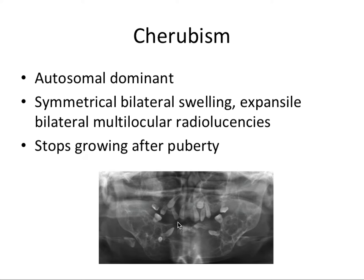Fibrous dysplasia, which we covered in the last video on fibroosseous lesions, can also cause severe facial deformities, but cherubism is bilateral and symmetric, whereas fibrous dysplasia is often asymmetrical — often focused on one side of the mandible or maxilla. Also, the radiographic appearance of cherubism is very different from fibrous dysplasia, which is radiopaque.